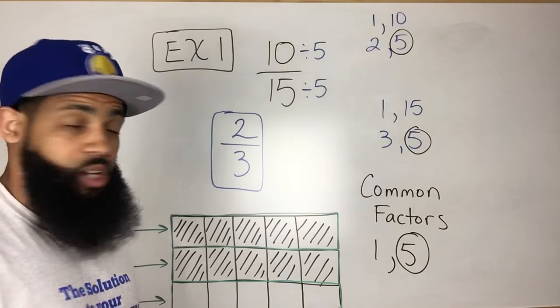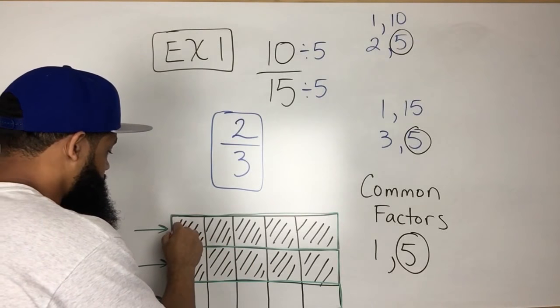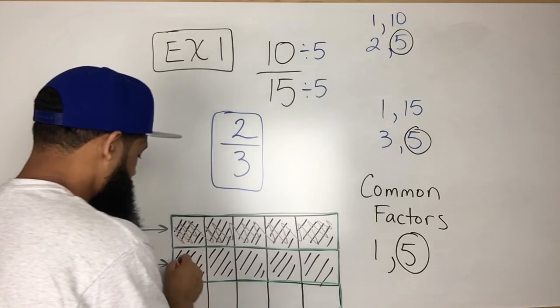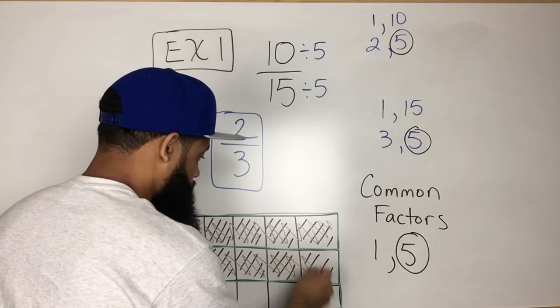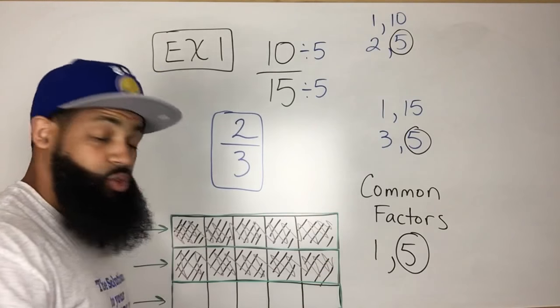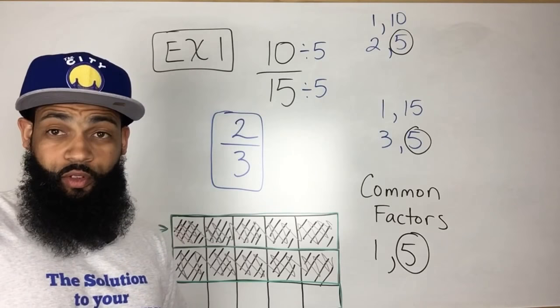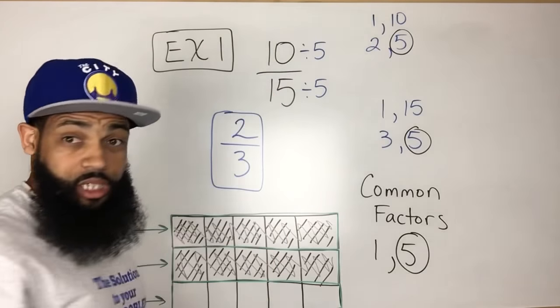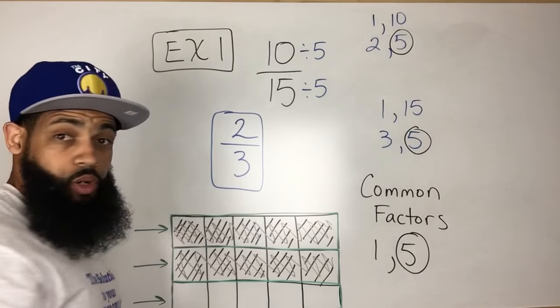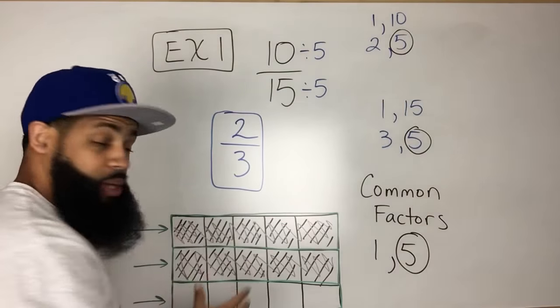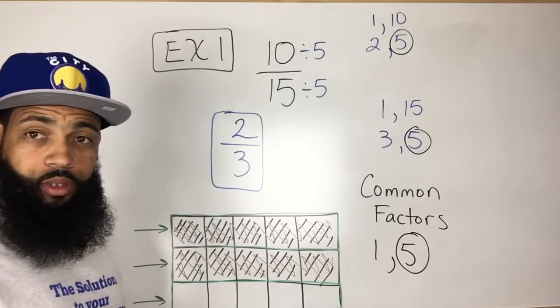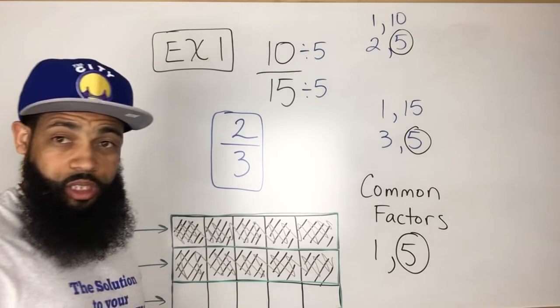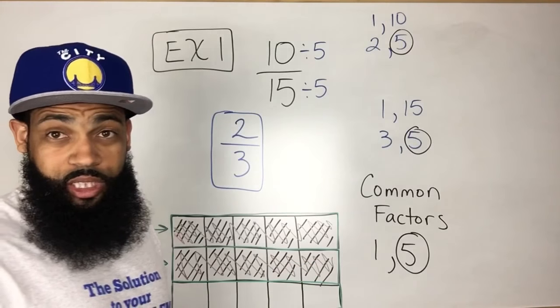So in this case, if I go ahead and shade in 1, 2 out of the 3 parts, then I still have an equivalent fraction. So that tells me visually that 10 out of 15 or 10 over 15 is equivalent to 2 thirds. And all I did for the picture was I had 15 small squares, but I redrew them as 3 larger sections and I colored in 2 out of the 3 sections.